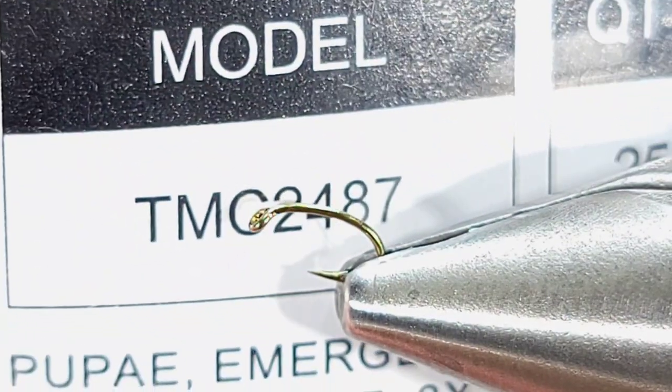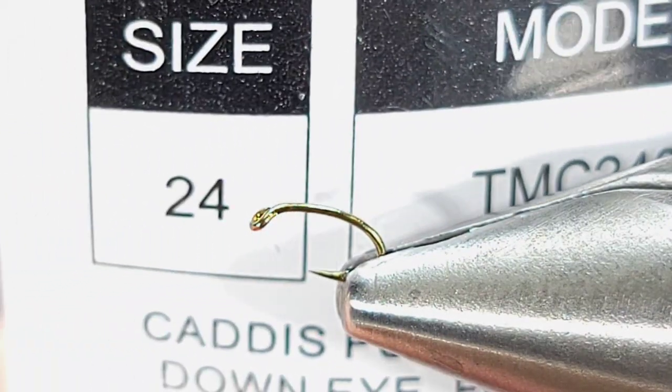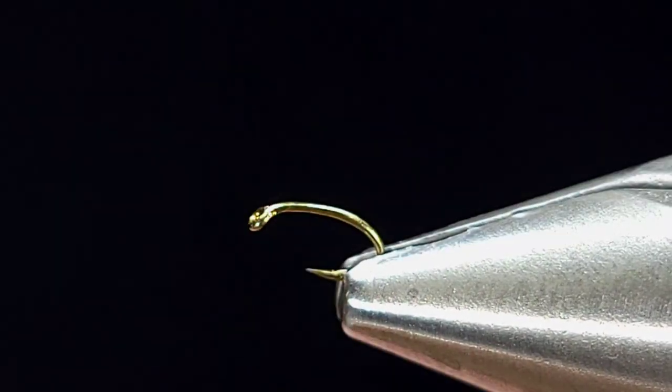To get started in the vise, I'm going to use a TMCO 2487 in size 24. This is just a caddis pupa hook.